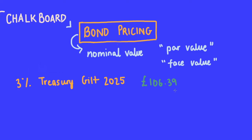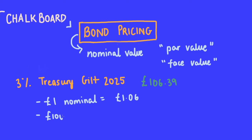The simple way to calculate this is by converting the holding into a price per one pound of nominal stock. So for every one pound nominal, the current value would be one pound and six pence. And if you have a thousand pounds nominal, you simply multiply, giving you 1,063.90 pence — or £1,063.90.